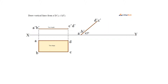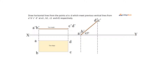To draw the top view, draw vertical lines from A', B', and C'D'. Draw horizontal lines from the points ABCD which meet the previous vertical lines from A', B', C', D' at A1, B1, C1, and D1 respectively.